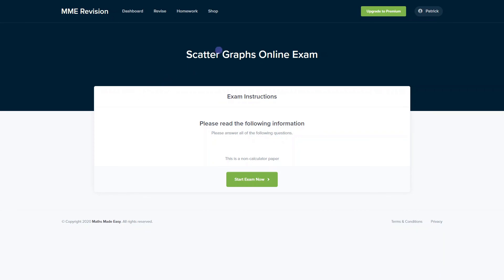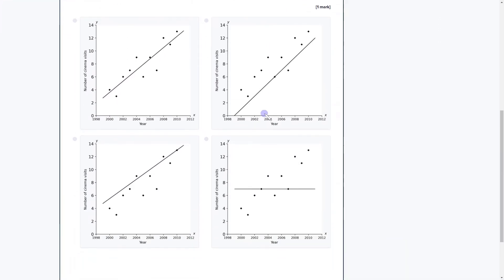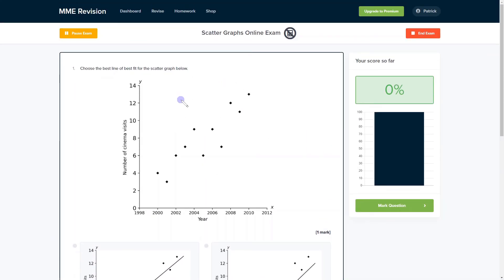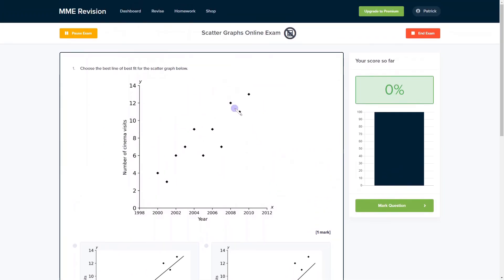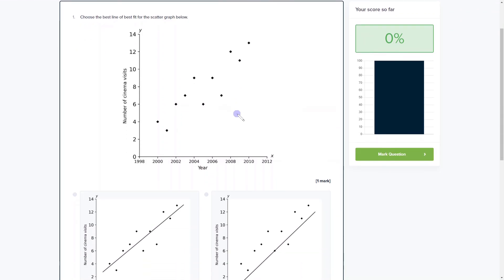If you want to practice some scatter graphs exam style questions, then why not have a go with our online exam. It's available through our revision platform. If you take the test, you'll find loads of different questions to have a go at and you receive instant feedback on all of them. This is really useful if you want to find out where your strengths are, what your weaknesses are, and how you can improve quickly. If you're interested, then click the link below.